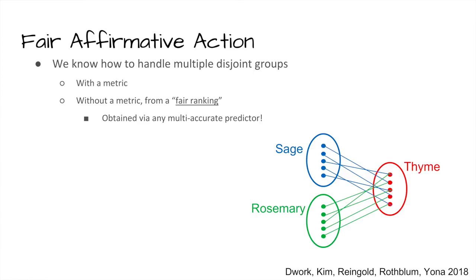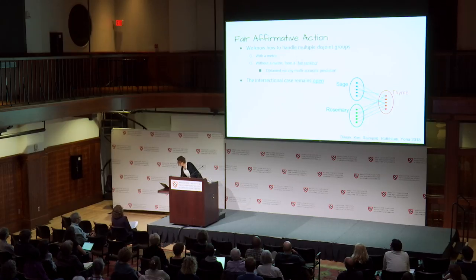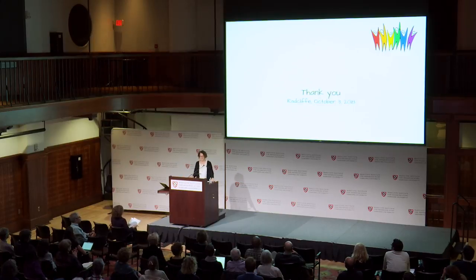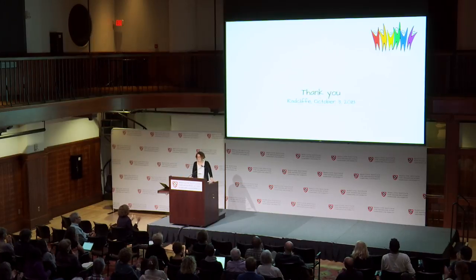The intersectional case remains open. We don't know how to do these affirmative action strategies when our sets of minority groups intersect — for instance, someone who is both a sage-eater and a rosemary-eater. I think I'm out of time, so I'll skip to the end and be happy to take some questions. Thank you.